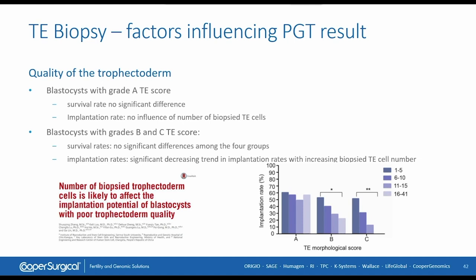Another factor influencing PGT result quality is the quality of the embryo itself — specifically the quality of the trophectoderm. A study by Zhang analyzed different qualities of trophectoderm cells and compared them to resulting implantation rates. When taking 1 to 5, 6 to 10, 11 to 15, or 16 to 41 cells from grade A, B, or C embryos, the number of cells taken from top-quality grade A trophectoderm did not influence the implantation rate.